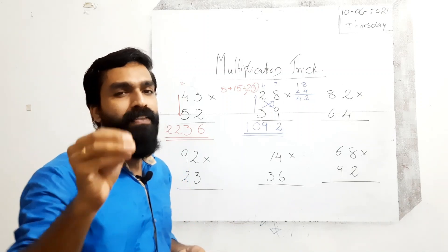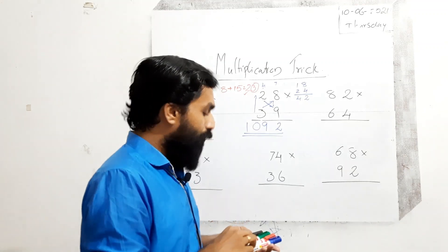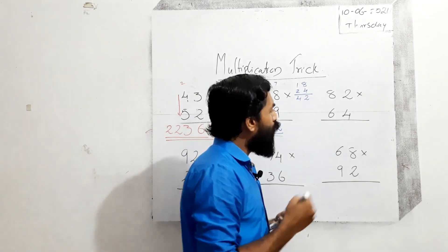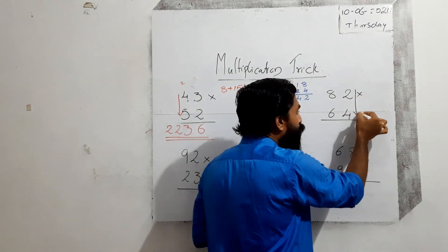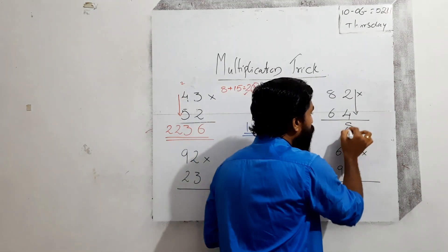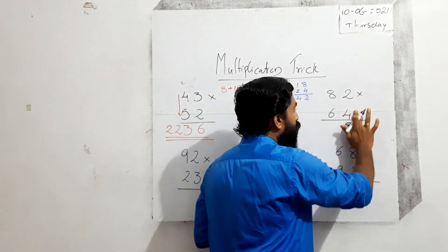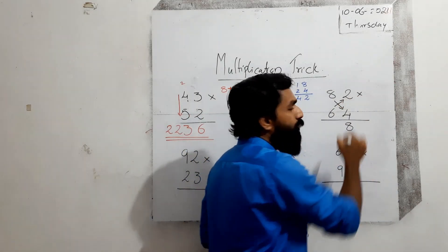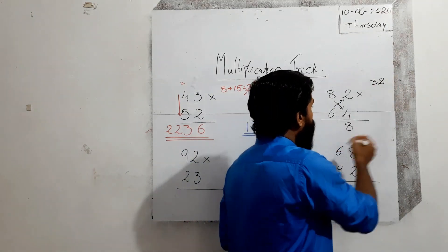Third question: 82 into 64. Same method. Unit places first: 4 into 2 is equal to 8 — write 8 here. Next: cross multiplication. 8 into 4 is equal to 32, and 6 into 2 is equal to 12. Add them: 32 plus 12 is equal to 44.